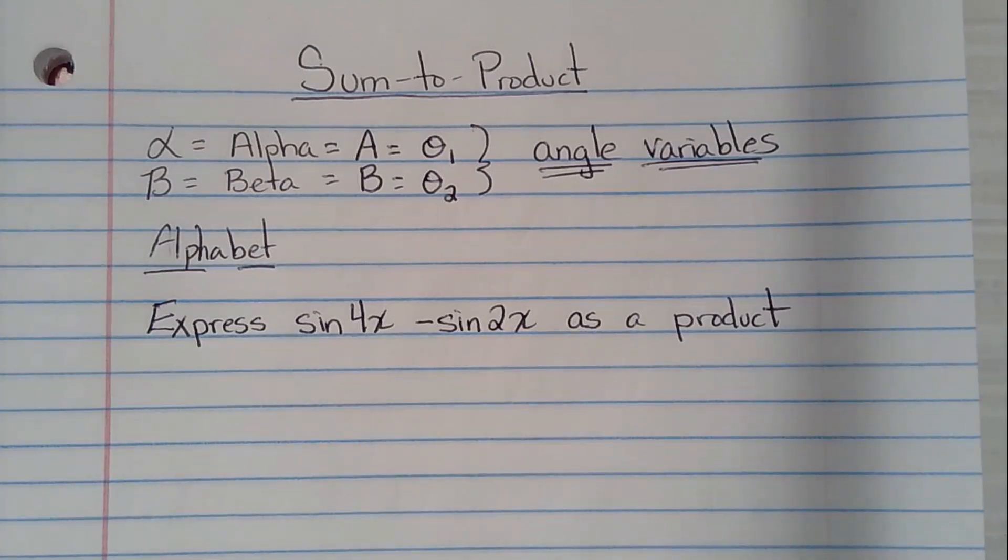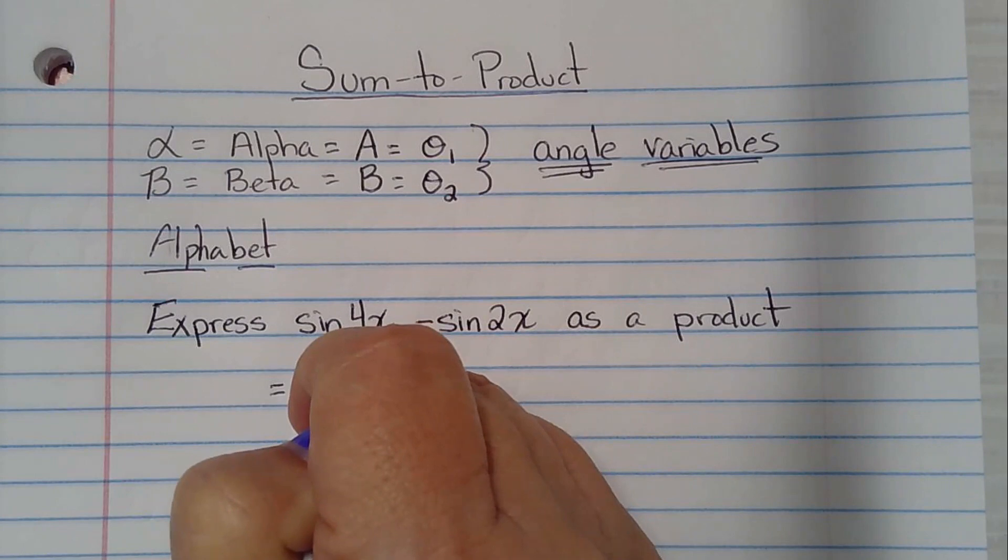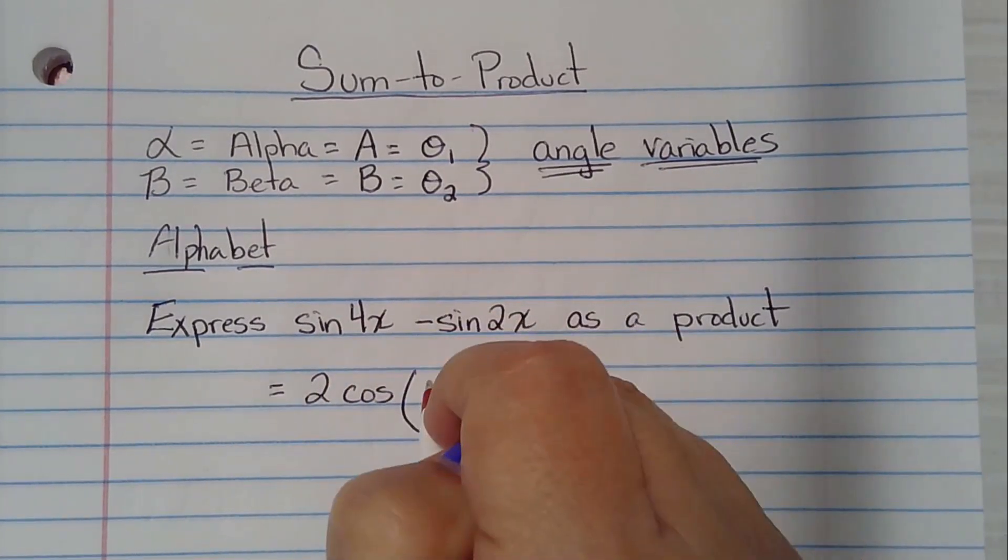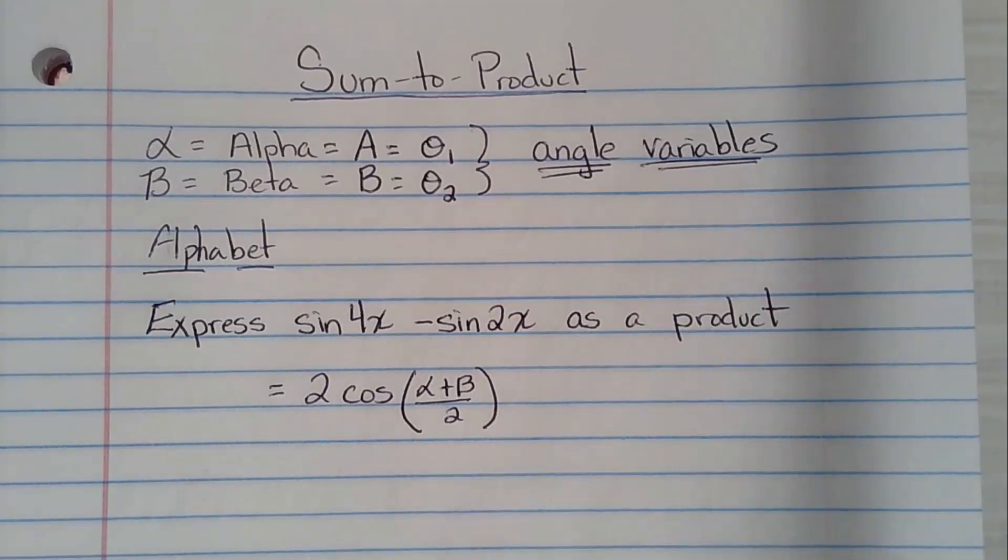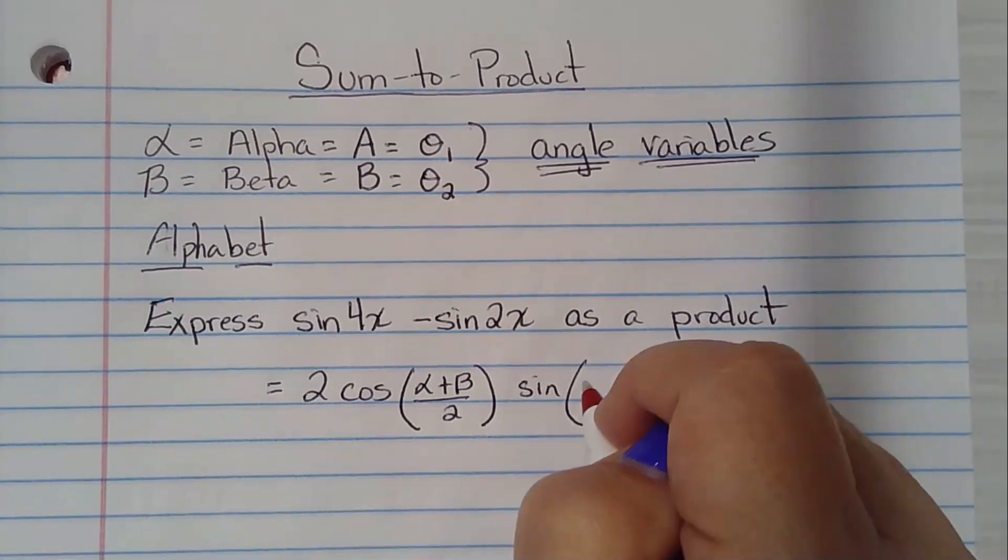Put your finger on that formula. And all we're going to do first is copy the right-hand side of that down. It says 2 cosine, parentheses, alpha plus beta over 2, close parentheses, sine, parentheses, alpha minus beta over 2, close the parentheses.